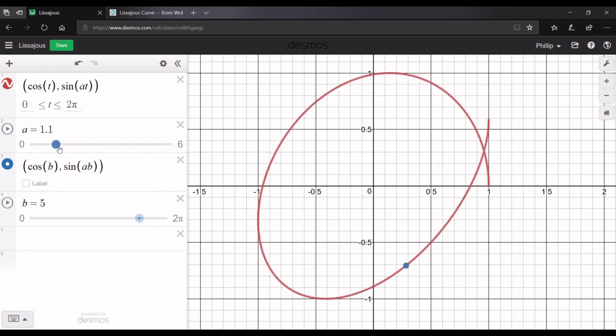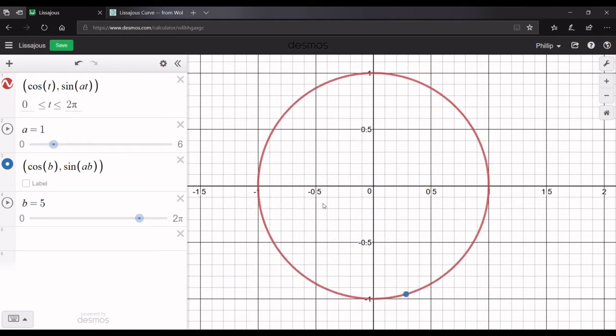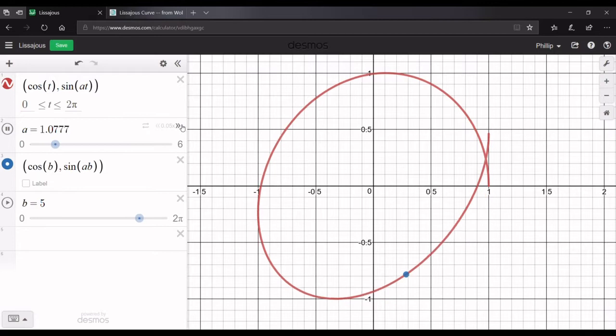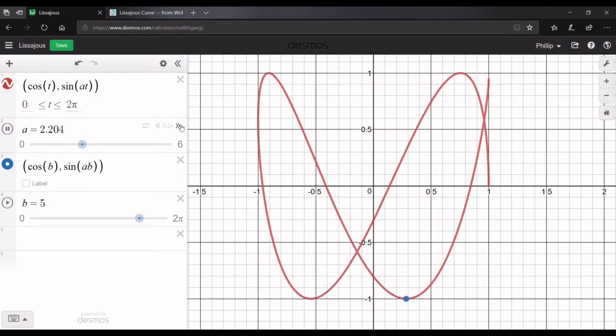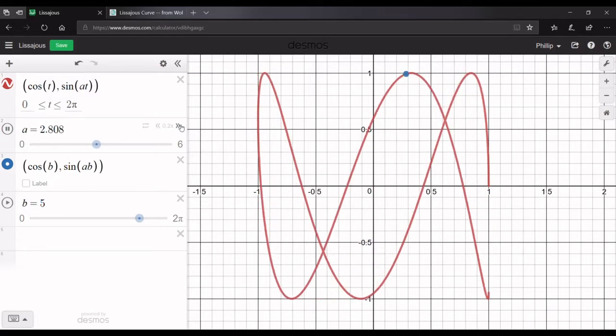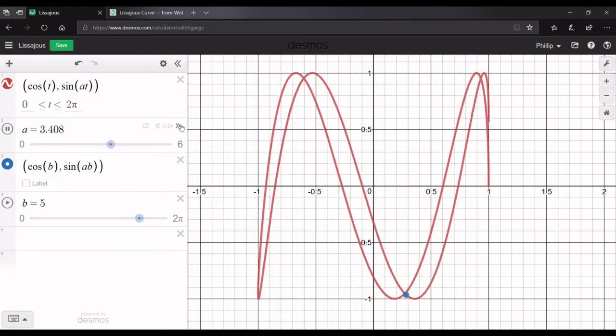So, Lissajous curves. As I explained earlier, it's when you change the ratio of how much the y values oscillate and the x values oscillate. So first, let's just look at the animation here. I think it's absolutely beautiful. And you can watch this go. I can watch this go for hours.